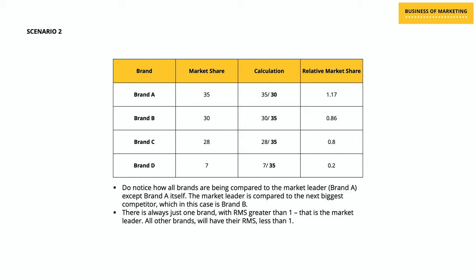As you move from the calculation of relative market share for brand A to brands B, C, and D, you see that the denominator is always the same — the market share of brand A — because brand A is the largest competitor for all three other brands in the category. And if you look closely at the relative market share column, you will notice that there is always only one brand which has a relative market share of more than one. Everyone else has a relative market share of less than one. When the RMS is more than one, you understand it's the market leader's RMS.